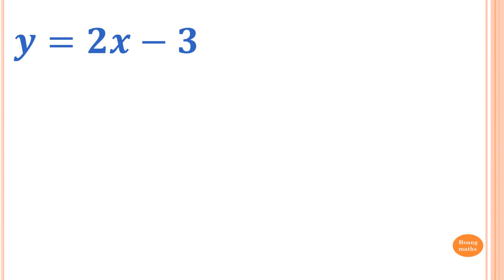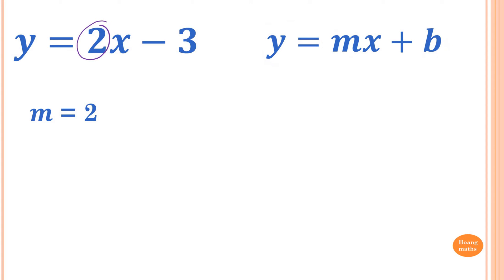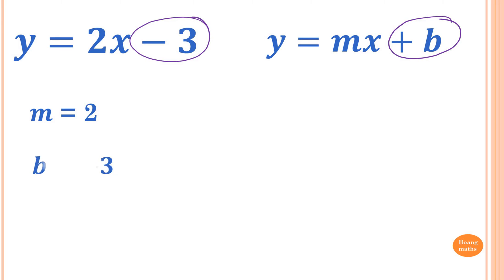y equals 2x minus 3. To write down the gradient and y-intercept, you need to write it in this form first because this form tells you both. The coefficient of x is the gradient, which is 2. The constant b is minus 3. So the gradient is 2 and the y-intercept is minus 3. Just compare with the standard form.